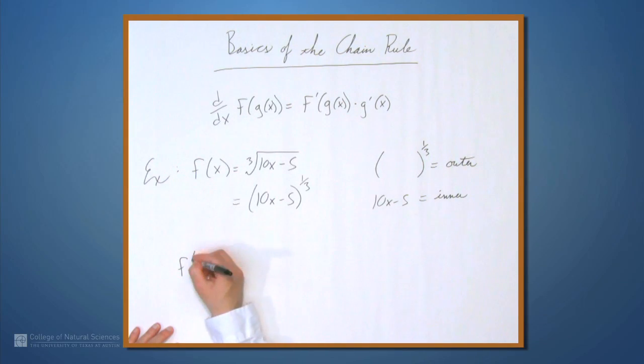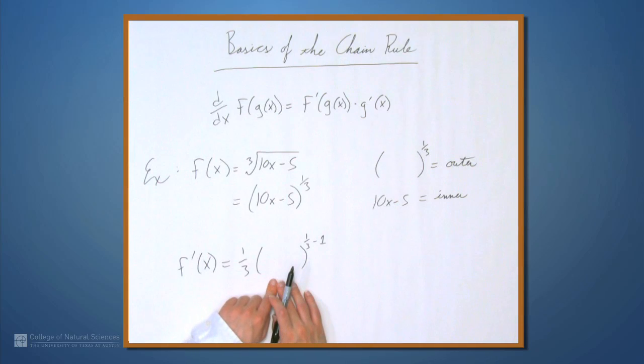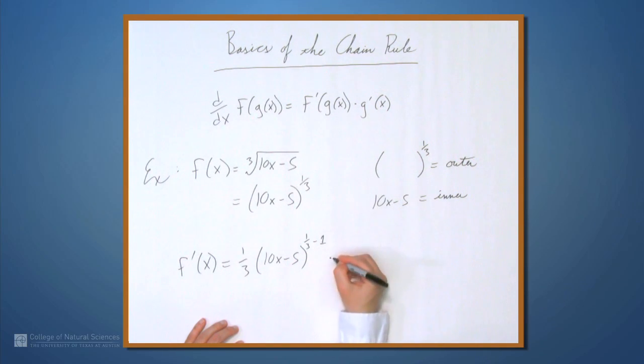So when we differentiate, when we get f', we're first going to take the derivative of the outer function. The derivative of something to the one-third is one-third of that something to the one-third minus one. We apply the power rule here. The exponent, the old exponent comes down and the new exponent is one-third minus one, or whatever it used to be, minus one. What goes inside the parentheses is what was in the parentheses before. So we put 10x-5. Now we multiply by the derivative of the inner function. 10x-5, the derivative of that, is 10.